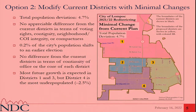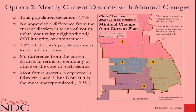Option two is to modify the current districts with minimal changes. The only changes would be to even out those lines so you don't have those small deviations, giving straight lines throughout the plan. This would lower the deviation to 4.7 percent. There would be no appreciable difference from the current districts in terms of voting rights, contiguity, neighborhood or community of interest integrity, or compactness. The issue remains that the most underpopulated district is not where the bulk of future growth is expected.